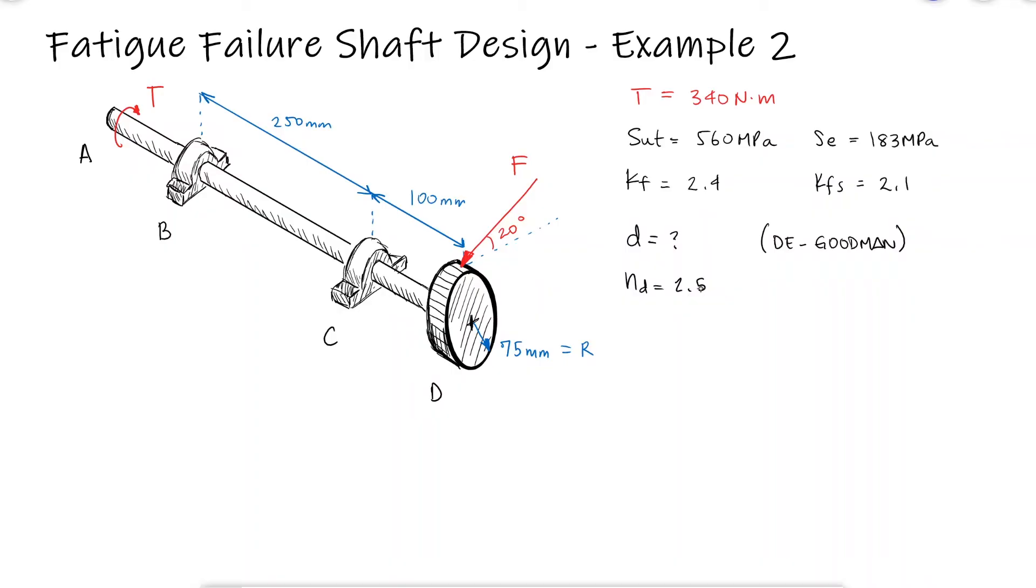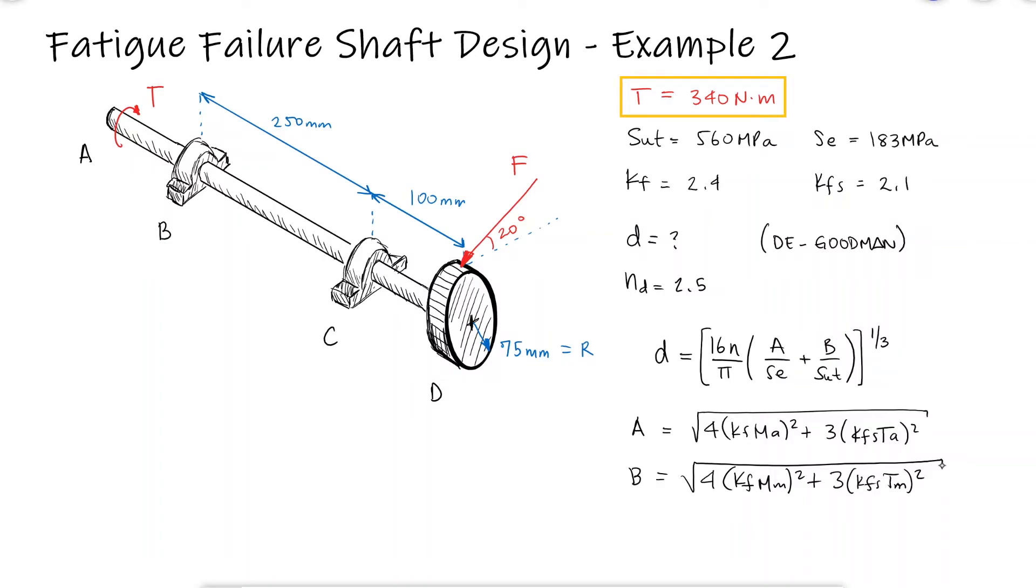Just like in the previous example, the design factor will depend on our material properties and the capital A and capital B coefficients for which we developed expressions in the main video. Notice, however, that the torque is constant, so the given value of 340 Newton meters will be the constant mean torque, which means that the alternating torque is zero.